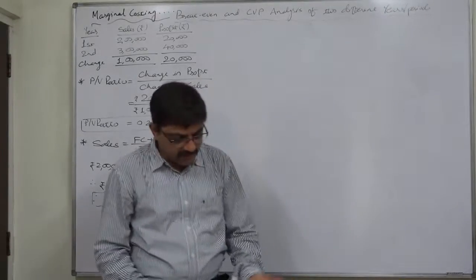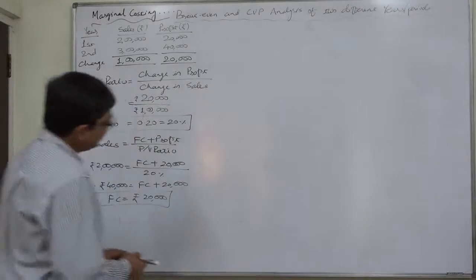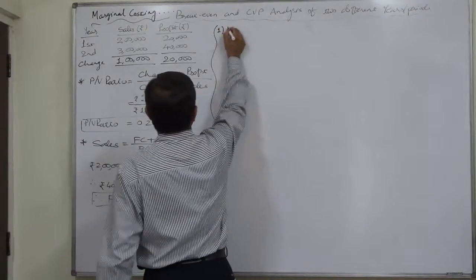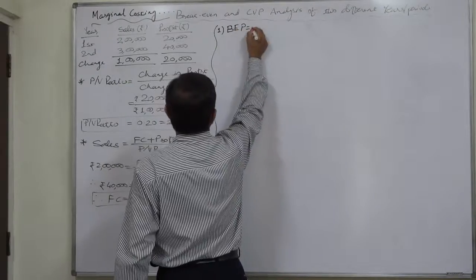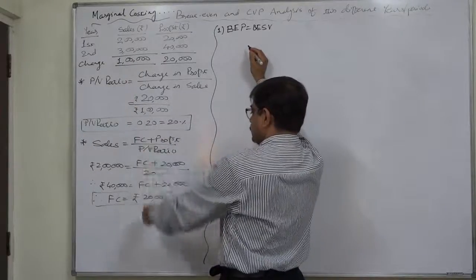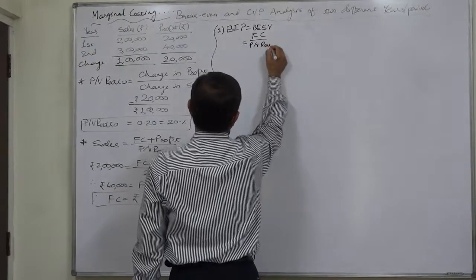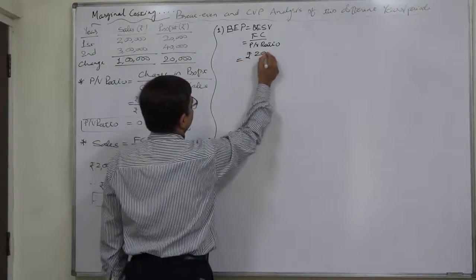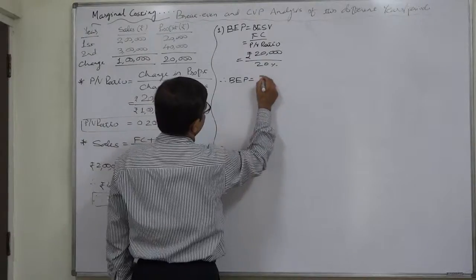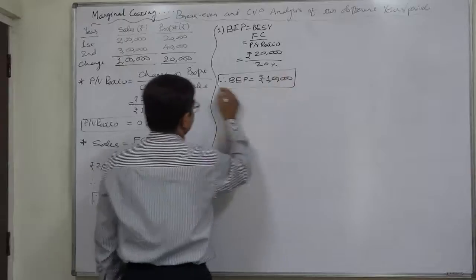We have been asked to calculate BEP, margin of safety, profit if sales are given, or sales if profit is given. First, let us calculate the break-even point. We can calculate break-even sales value only, and BEP will be the same for both years because PV ratio and fixed cost remain constant. BEP equals fixed cost Rs. 20,000 divided by PV ratio 20%, which gives Rs. 1,00,000 for both years.